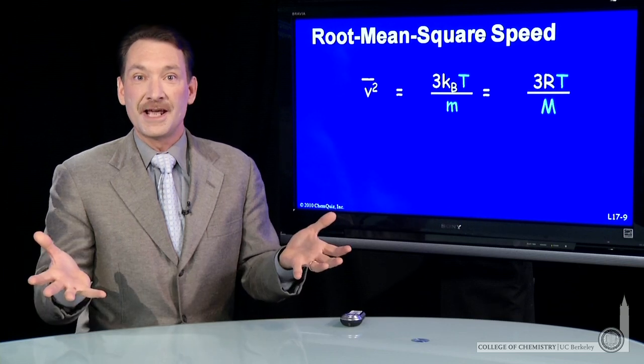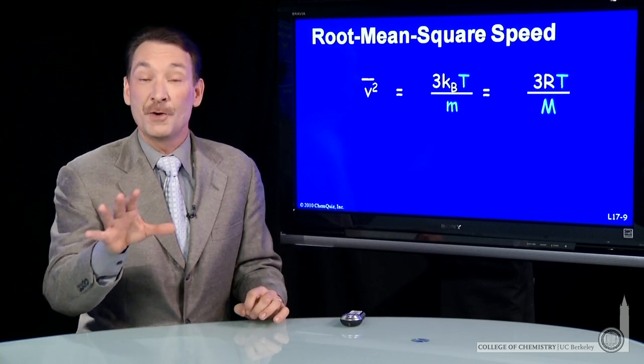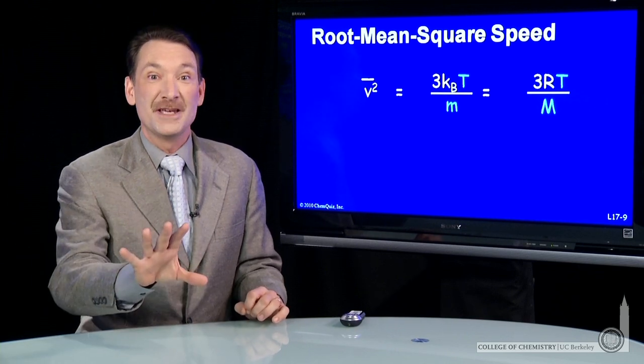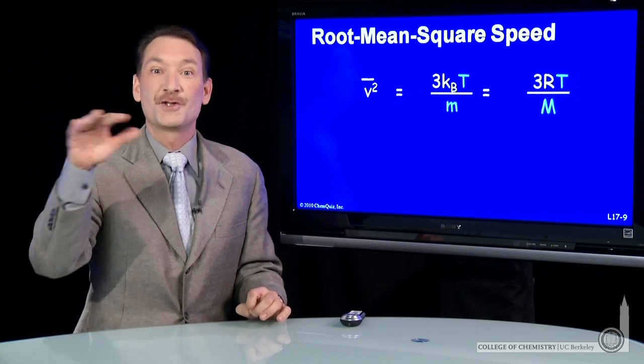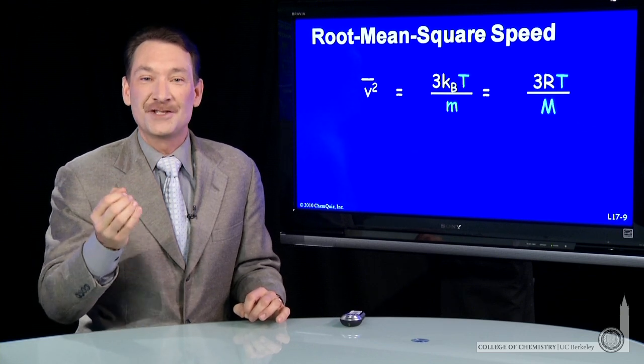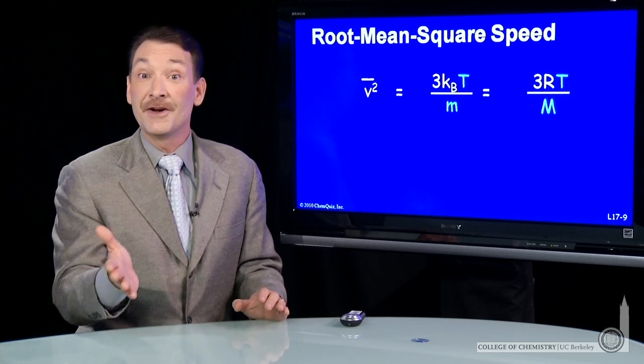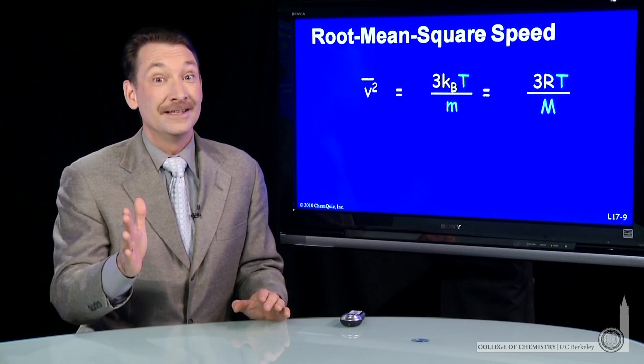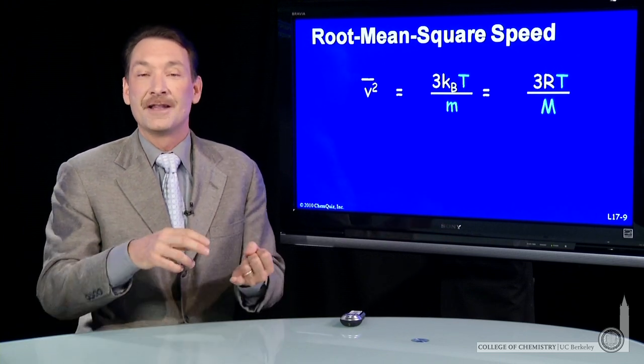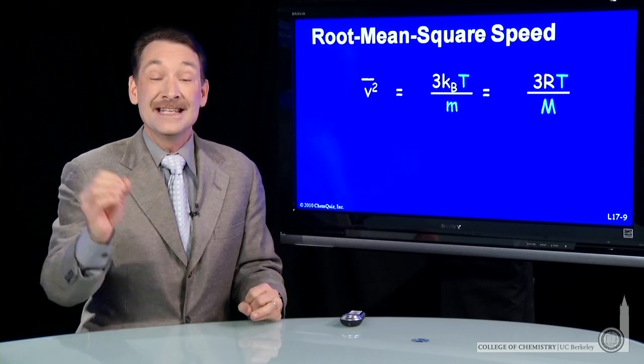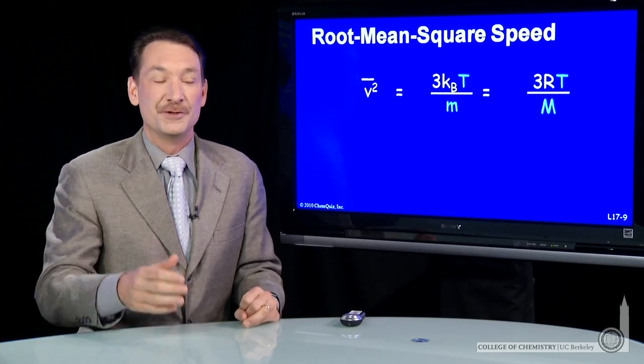Our expression for the kinetic energy has the velocity squared, the mean velocity squared in it. So we can solve for the mean velocity squared, take the square root, and we'll have a quantity called the root mean squared velocity. Now, it's not exactly the mean velocity, but it's very close, and it depends on fundamental properties, like the temperature and the nature of the gas. So we can easily solve for that quantity.